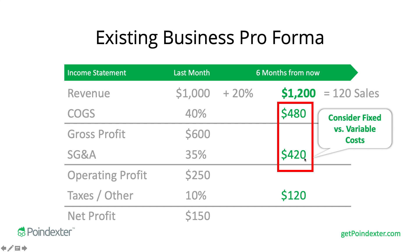If you want a detailed perspective on what costs will be in the future, identify which individual line items are fixed versus variable and forecast them appropriately. Keep fixed costs the same if you don't expect to move into a new building or hire new employees, but change the variable costs. That will give you a better sense of how things will react in at least a short time frame. If we're looking a few years out, we can't go from $1,200 in sales to $100,000 in sales without almost all of our costs growing.